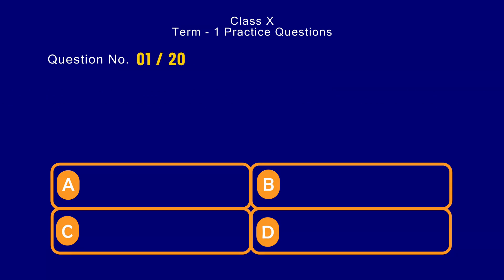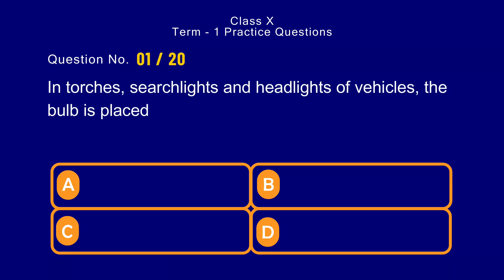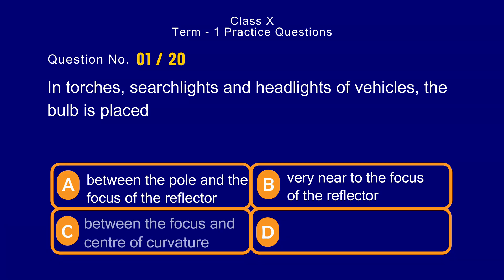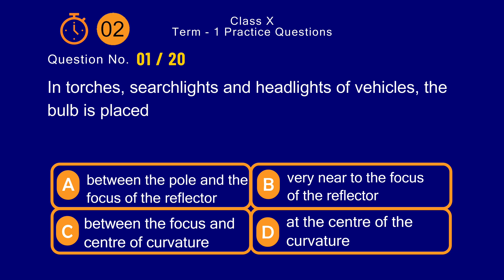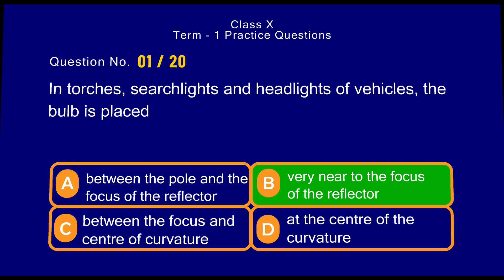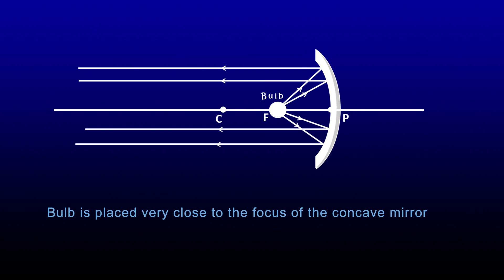Question number 1. In torches, searchlights and headlights of vehicles, the bulb is placed — options: a) between the pole and the focus of the reflector, b) very near to the focus of the reflector, c) between the focus and center of curvature, d) at the center of the curvature. The correct answer is option b) very near to the focus of the reflector. To get a parallel beam from the reflector, the bulb is placed very near to the focus of the reflector.